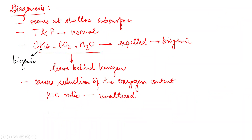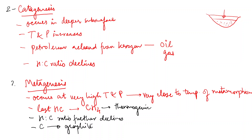So these are the three processes that operate: diagenesis, catagenesis, and metagenesis. The petroleum is expelled from kerogen during the catagenesis process.